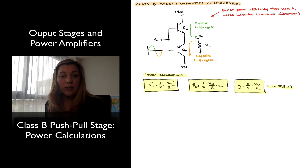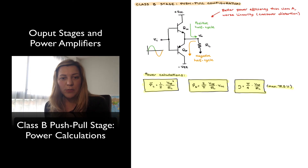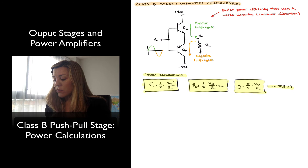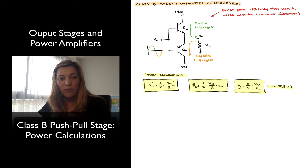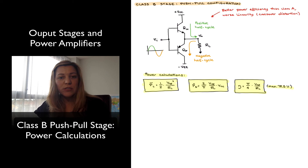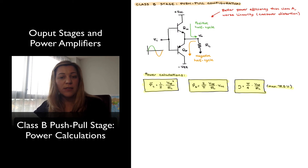So we have just taken a look at the power calculations for the Class B push-pull configuration. We derived expressions for the average power delivered to the load, the average power provided by the supplies, and their ratio — the power efficiency. We have seen it achieves a maximum theoretical power efficiency of 78.5%, compared to 25% for the Class A output stage. It has overall better power efficiency than Class A, but worse linearity due to crossover distortion.